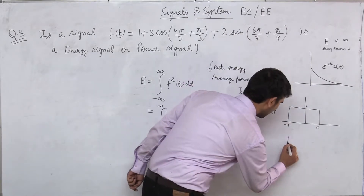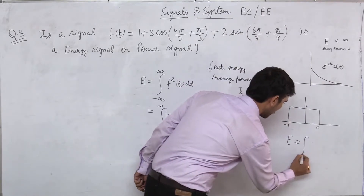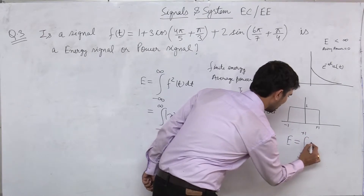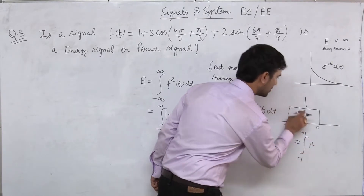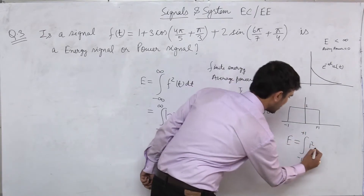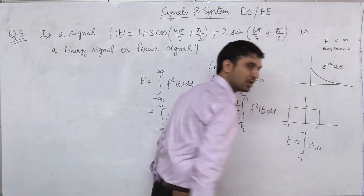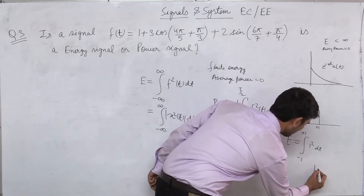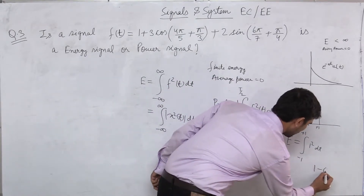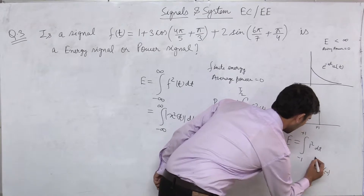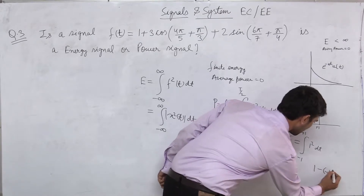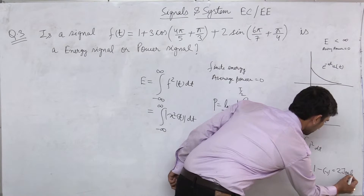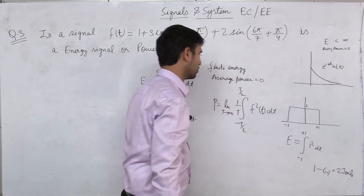How will you find the energy of the signal? E equals integral from minus 1 to plus 1 of 1 squared dt, that is 1 minus (minus 1) = 2 joules. So the energy of the signal is 2 joules.